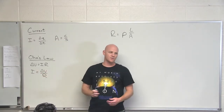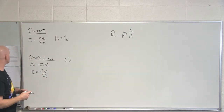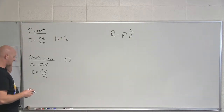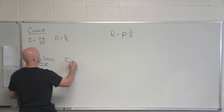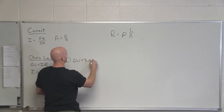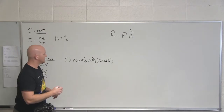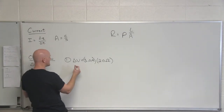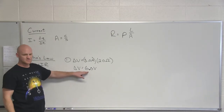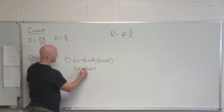Given any two of the three variables in Ohm's Law, you should be able to calculate the third. Question one asks: what is the potential drop across a two-ohm resistor with a current of three amps flowing through it? We want delta V. Current is three amps, resistance is two ohms — that's the symbol for ohms, your SI unit for resistance. Multiplying amps times ohms gives units of volts. The potential drop across that resistor is six volts. Technically, delta V could be negative six volts because it's a potential drop.